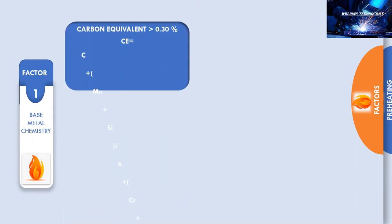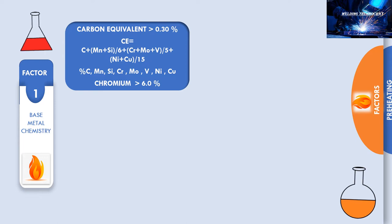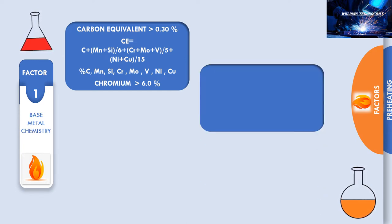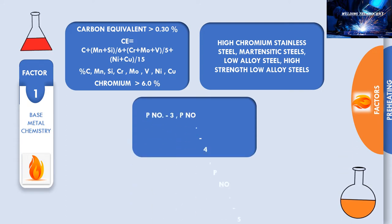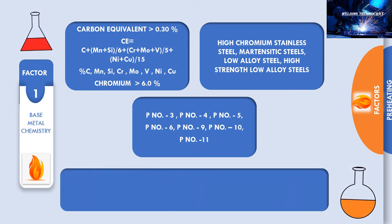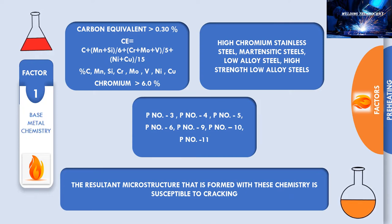Factor one is the base metal chemistry. The chemical composition, mainly the carbon content and the alloy content, affects the selection of preheat. If the carbon equivalent is more than 23%, preheat selection is critical. The percentage of mainly carbon, manganese, silicon, chromium, molybdenum, vanadium, nickel, and copper is decisive. If the chromium percentage is above 6%, preheat selection must be done carefully. High chromium stainless steel, martensitic steel, low alloy steel, and high strength low alloy steel require preheat — they belong to P-numbers 3, 4, 5, 6, 9, 10, and 11. The resultant microstructure formed with this chemistry is susceptible to cracking.